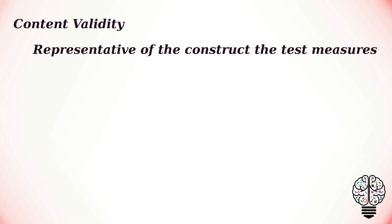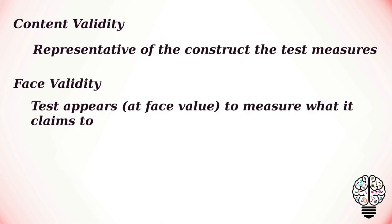There are generally two components of content validity. Face validity is one of the most basic measures of validity. Essentially, researchers are simply taking the validity of a test at face value by looking at whether a test appears to measure the target variable. For example, on a measure of happiness, the test would be said to have face validity if it appeared to actually measure levels of happiness.